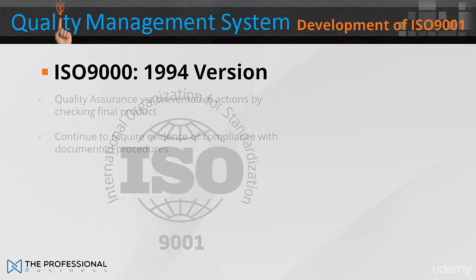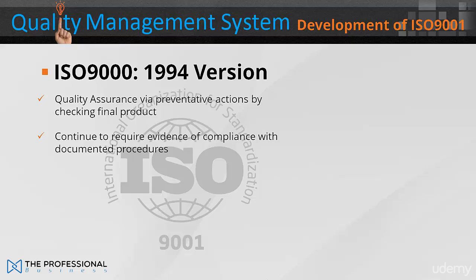In the ISO 9000 1994 version, the emphasis was on quality assurance through preventative actions, and required evidence of compliance with documented procedures, as with the first edition. The downside was that companies tended to implement its requirements by creating many procedural manuals and became burdened with ISO bureaucracy. In some companies, adopting improving processes could actually be impeded by the quality system.